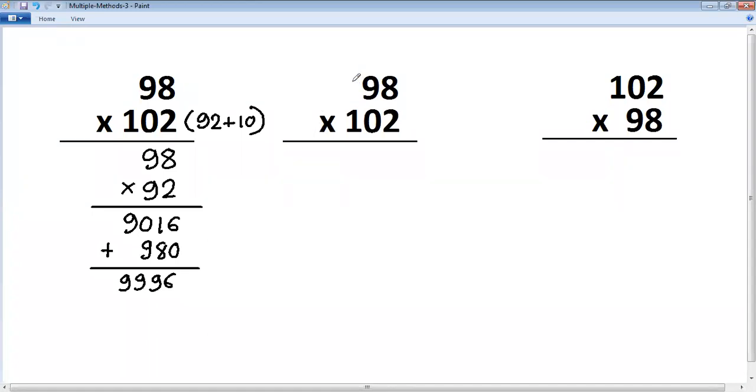Second, we'll go for criss-cross. We'll just put 0 to make it 3 by 3. First step here is 8 into 2 is 16, so you have to write 6 carry 1.